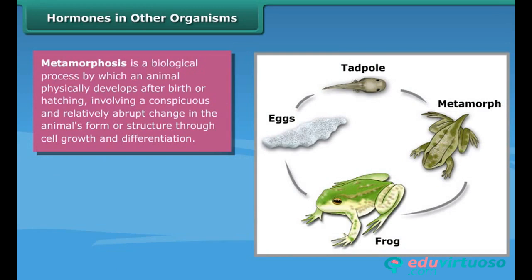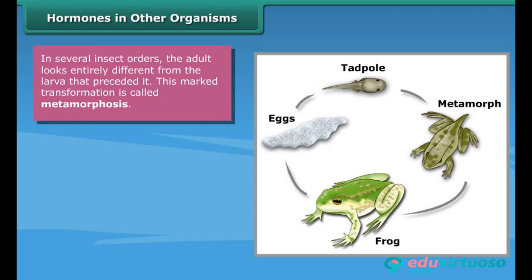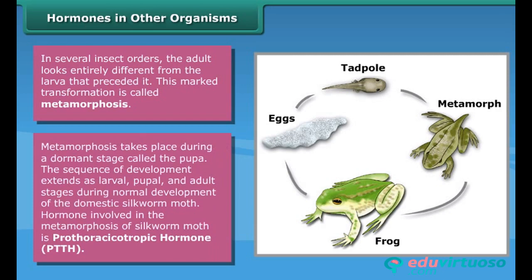Hormones in other organisms: metamorphosis is a biological process by which an animal physically develops after birth or hatching, involving a conspicuous and relatively abrupt change in the animal's form or structure through cell growth and differentiation. Amphibian metamorphosis is the developmental process initiated by thyroid hormone, which transforms a tadpole into a frog. In several insects, the adult looks entirely different from the larva — this marked transformation is called metamorphosis, taking place during a dormant stage called the pupa. The sequence extends through larval, pupal, and adult stages. In the domestic silkworm moth, the hormone involved in metamorphosis is prothoracicotropic hormone (PTTH).